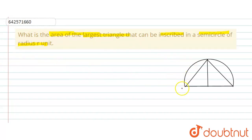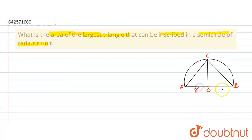Here you can see that let's say this is point A, this is B, and this is C. So ABC forms a triangle inscribed in this semicircle. This is the center O, and OA is a radius and OB is also a radius of the semicircle.